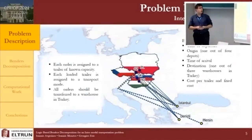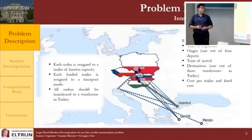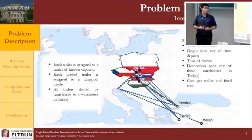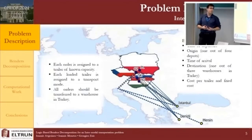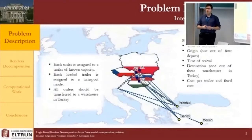In the intermodal network, all depots are directly connected by roadway with the warehouses in Istanbul and Izmit. However, trailers located in Hungary can alternatively be transferred by railway to Istanbul, and trailers located in Czechia can be transferred by railway to the port of Trieste in Italy and then by ship to Istanbul or Mersin.